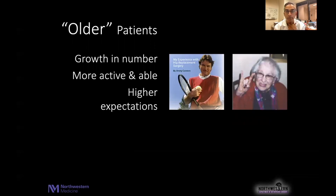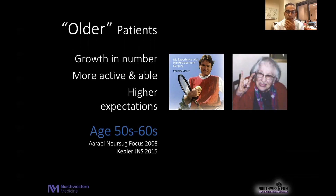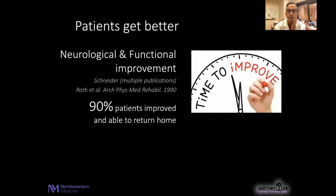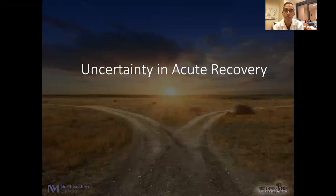Let's tackle those one by one. Older patients — well, these are growing in number. We know that across North America, Europe, Asia, and in many parts of the developing world, we see growth in the number of older patients. These are more active and more able patients than ever before, with higher expectations than ever before. Also, some of the literature would suggest the age group in this population can be as young as their 50s and 60s. Second is this notion that patients will somehow just get better with time — that they will improve both functionally and neurologically, with some studies reporting that up to 90% of patients were able to return home after acute central cord injury.